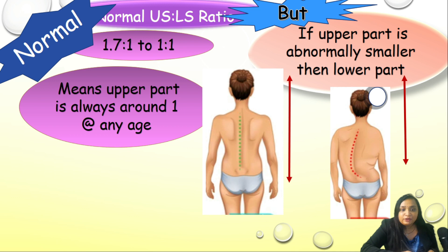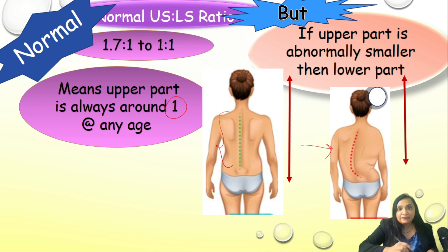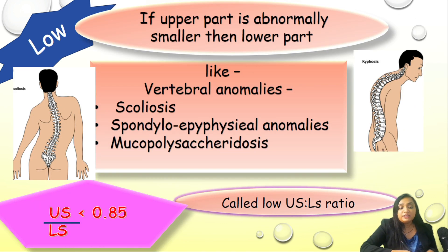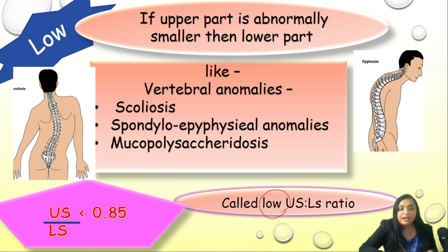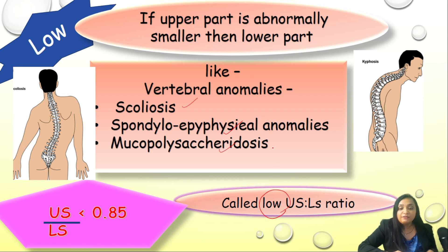Looking at the figure, the upper segment normally remains around 1 at any age. However, in conditions where there is an issue with the vertebral column — such as scoliosis, spondyloepiphyseal anomalies, and mucopolysaccharidosis (MPS) — the upper part of the body becomes small. MPS is a metabolic condition with lysosomal enzyme issues causing disturbed glycosaminoglycan metabolism. In all these conditions, we will have a lower upper segment to lower segment ratio.